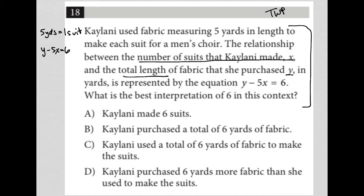What is the best interpretation of 6 in this context? I think, so, what I like to do in cases like this is, if x represents the number of suits that she made, and y represents the length of fabric that she purchased, well, what happens if x is equal to 0? If she makes no suits, we'd have y minus 5 times 0 equals 6. So, of course, that's just y equals 6.